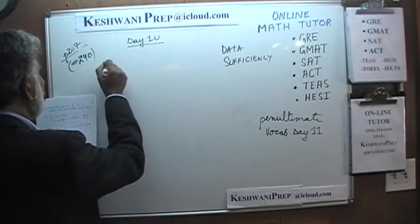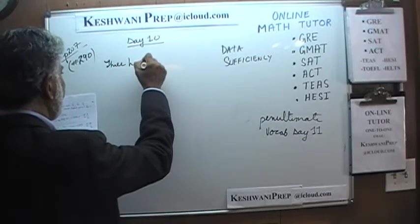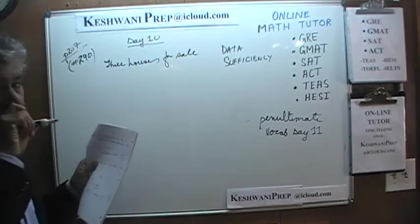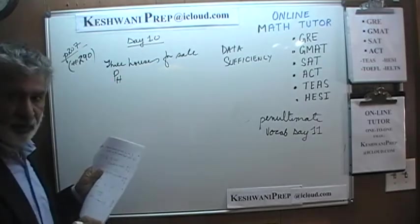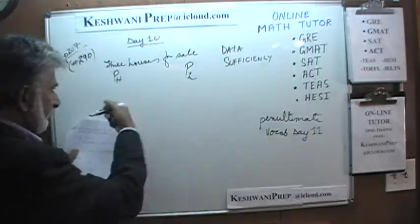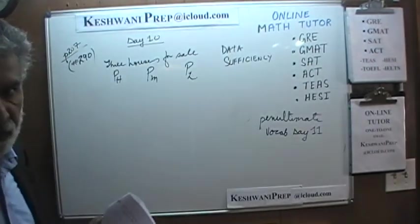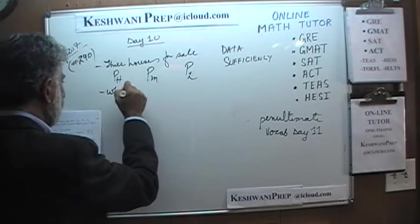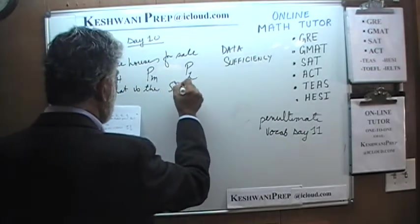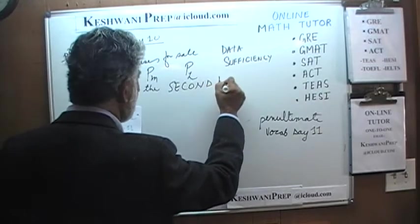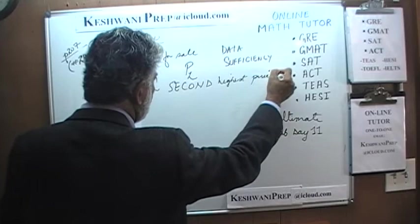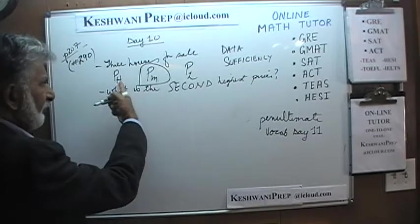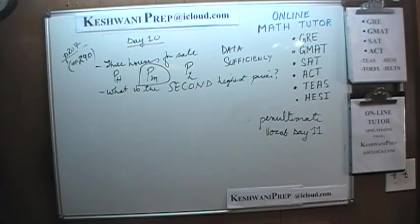Problem 290. We have three houses for sale on the market with three different prices: a highest price, a lowest price, and a middle price somewhere between the two. Our job — the question — is: what is the second highest price? Asking for the second highest price is the same as asking for the middle price.